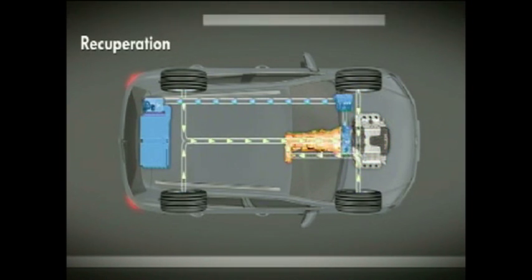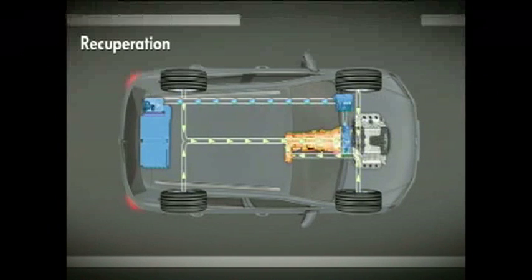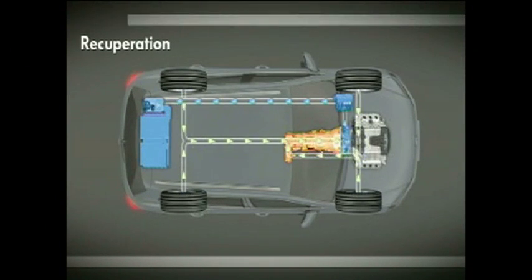When the driver brakes, the new Touareg hybrid makes use of the braking energy. The electric motor then works as a generator and converts kinetic braking energy into electrical energy. This is stored in the high-voltage battery and is available to the driver the next time the car starts off.